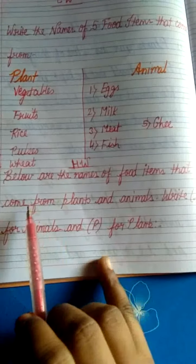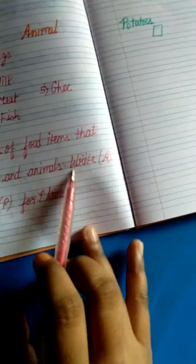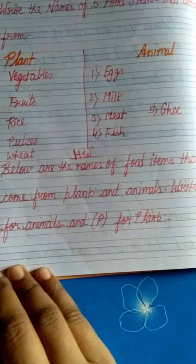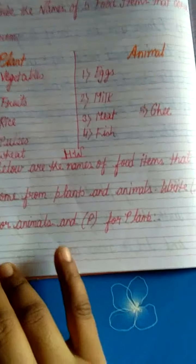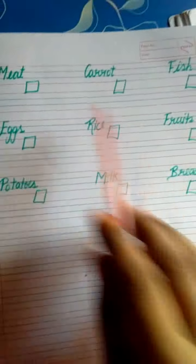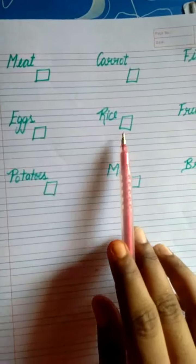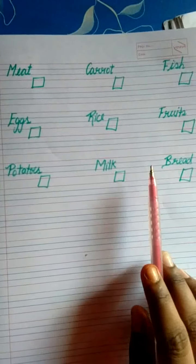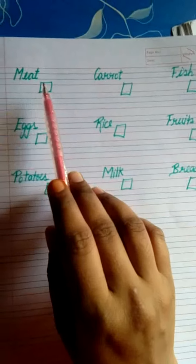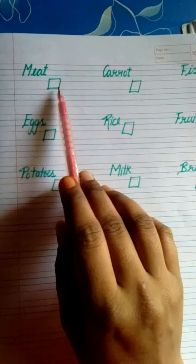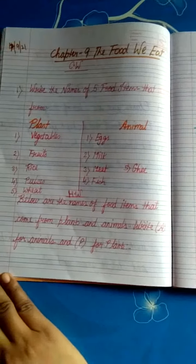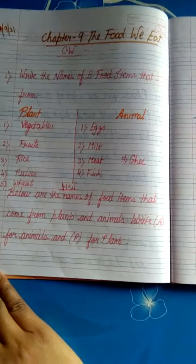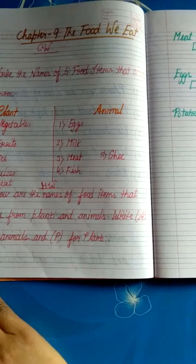For homework: below are the names of food items that come from plants and animals — meat, carrot, fish, eggs, rice, fruits, potatoes, milk, and bread. Write A for animals and P for plants in a box next to each item. I hope everyone has understood the classwork and homework. All of you will do it very nicely with good handwriting in your EBS copy. We will meet again in the new video. Bye-bye children.